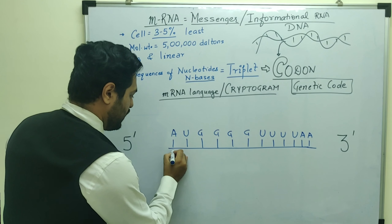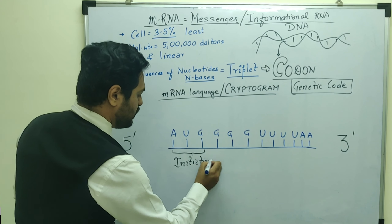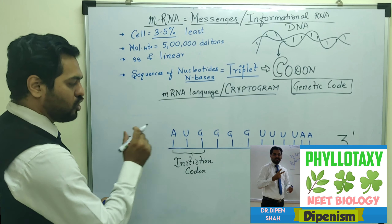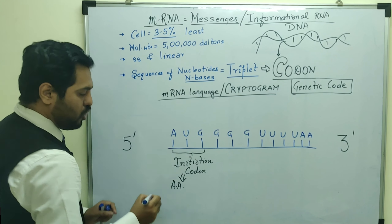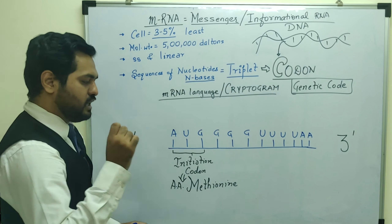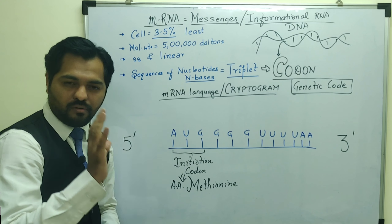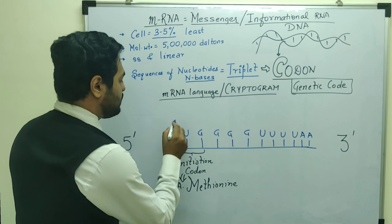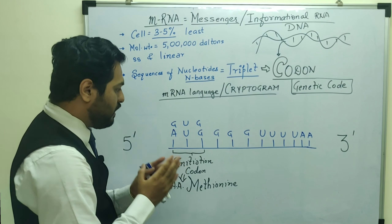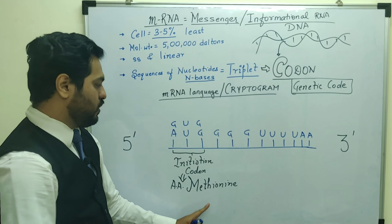The first codon AUG at the 5' end is called the initiation codon, also known as the start codon — it is always AUG. This initiation codon AUG codes for the amino acid methionine. Rarely, for entrance exams, remember that instead of AUG, the sequence GUG can act as start codon. GUG normally codes for the amino acid valine, but if it comes at the start position, it codes for methionine instead of valine. Otherwise, AUG is always the start codon.